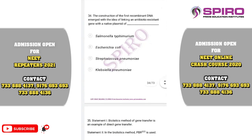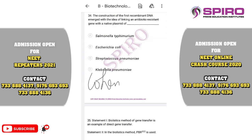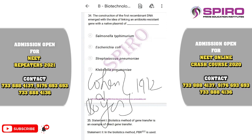Question thirty-four: the construction of the first recombinant DNA emerged with the idea of linking an antibiotic resistant gene with a native plasmid. The first recombinant DNA was constructed by Cohen and Boyer in 1972. They isolated an antibiotic resistant gene from bacteria and inserted it into a native plasmid of Salmonella typhimurium. The correct option is option B.